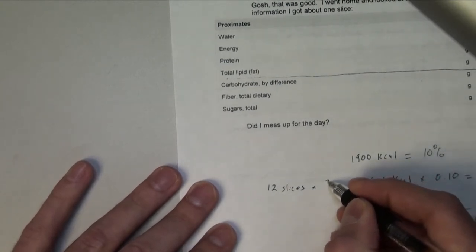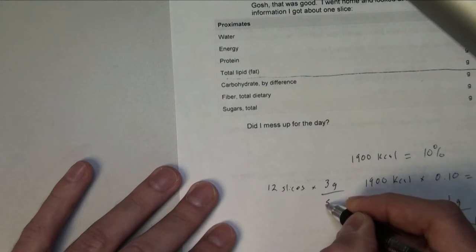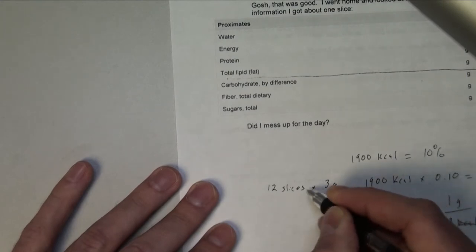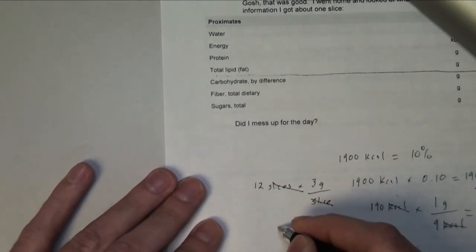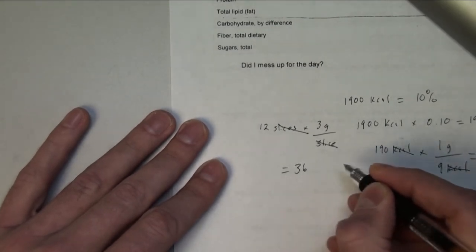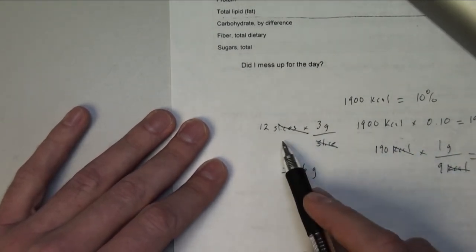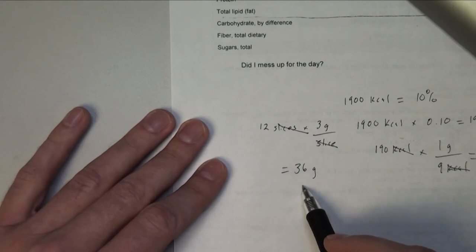So I'm going to take 12 slices and multiply by 3 grams per slice here. Cross out. And so what we're going to see is approximately 12 slices of bacon will give me 36 grams.